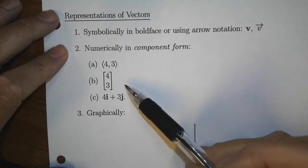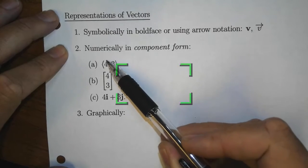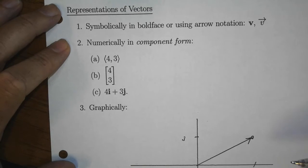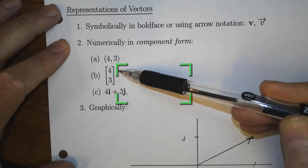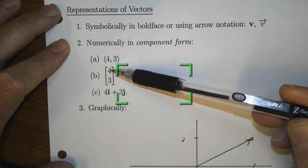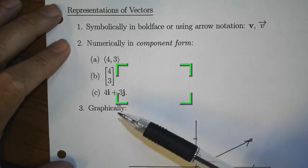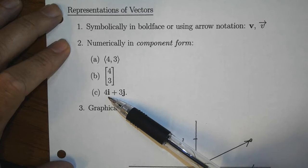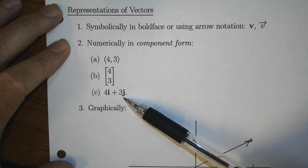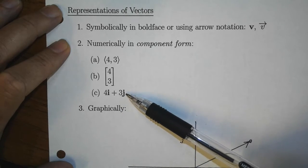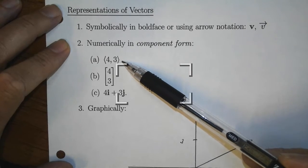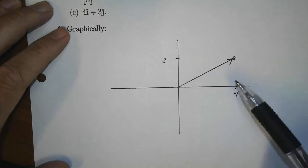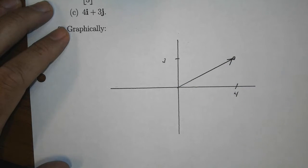We could write this vector as ⟨4, 3⟩ using angle brackets, as opposed to parentheses, to distinguish it from the point (4, 3). In linear algebra notation, this would be a column vector with entries 4 and 3. In physics notation, it's written as 4i + 3j, where the coefficient of i represents the x-direction component and the coefficient of j indicates the y-direction component. I will predominantly use the angle bracket notation ⟨4, 3⟩. We can represent this vector graphically by drawing it starting at the origin and ending at the point (4, 3).